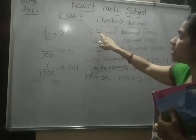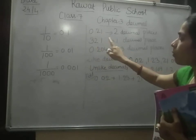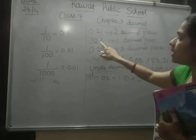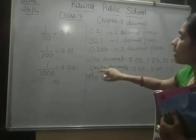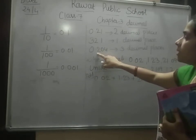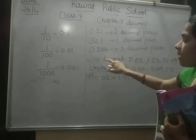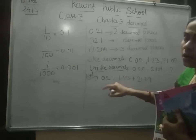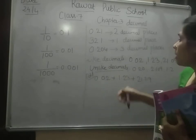2 numbers, so the decimal is before 2 numbers. Now 32.1 — here the decimal places are 1 because the decimal is before 1 number. Now in this case 0.204 — here 3 decimal places are there because the decimal is before 3 numbers.